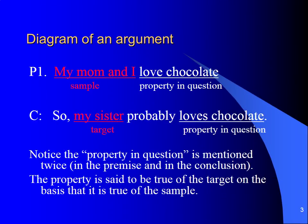Let's take a look at an example of these different terms in the context of an argument. The argument is: premise one — my mom and I love chocolate. Therefore, my sister probably loves chocolate. The premise contains evidence, or the things that I already know about. My mom and I are the sample. What I'm saying is true of my mother and I is that we both love chocolate. Therefore, loving chocolate is the feature or the property in question. In an inductive argument, we move from saying that the feature or property in question is true of the sample to true of the target.